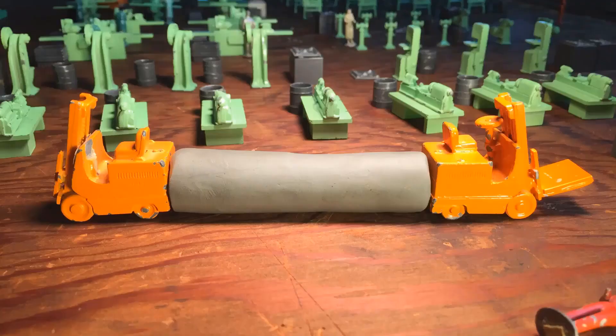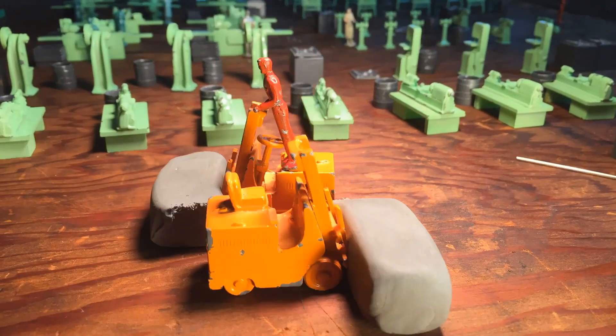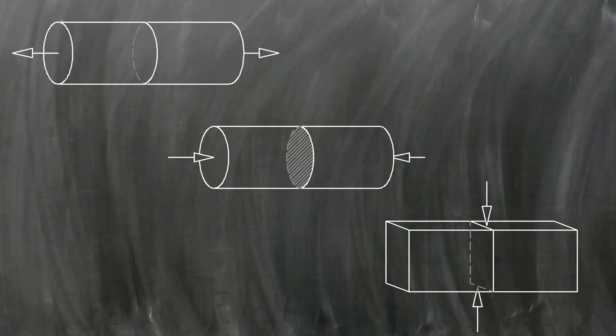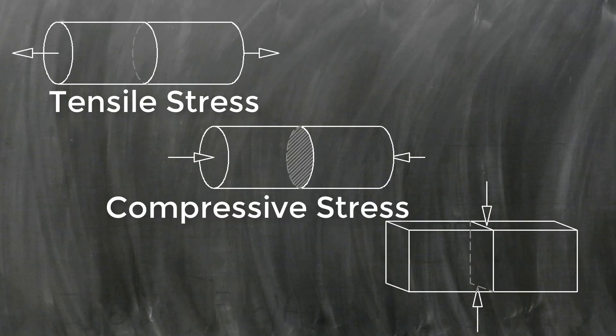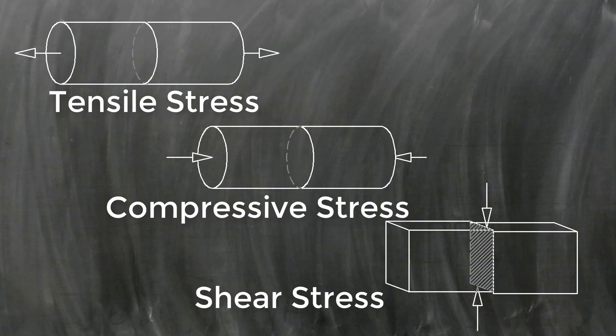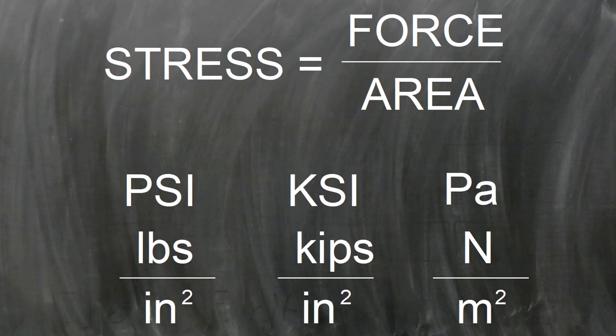So, in summary, there are three main ways of loading a workpiece: tension, compression, and shear. Loads applied to the objects develop stress in those objects. The stress can be tensile stress, compressive stress, or shear stress. The units of stress can be psi, ksi, or pascals.